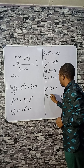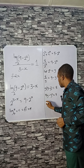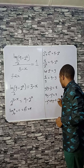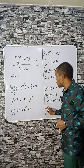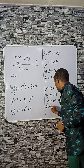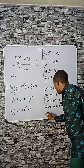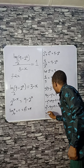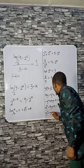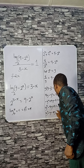Expanding the bracket gives 9y minus y squared equals 8, so we have minus y squared plus 9y minus 8 equal to 0. Multiplying through by minus 1 gives y squared minus 9y plus 8 equals 0.